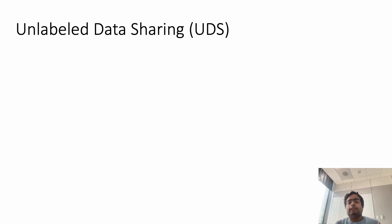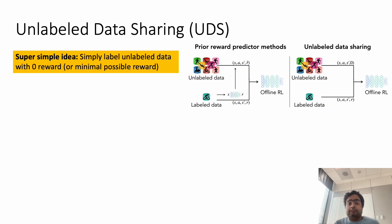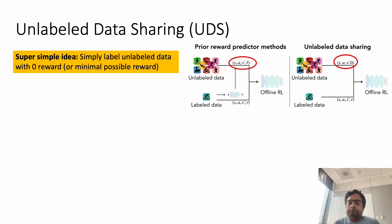In this work we introduce Unlabeled Data Sharing, or UDS for short, which is an extremely simple method that aims to solve the exploitation problem. UDS simply labels the unlabeled dataset with a reward of zero, or the minimal possible reward of the RL problem. This is quite in contrast to reward prediction methods that try to infer the correct reward for each transition — UDS simply assigns the minimal possible reward, which is a very simple and clean strategy.